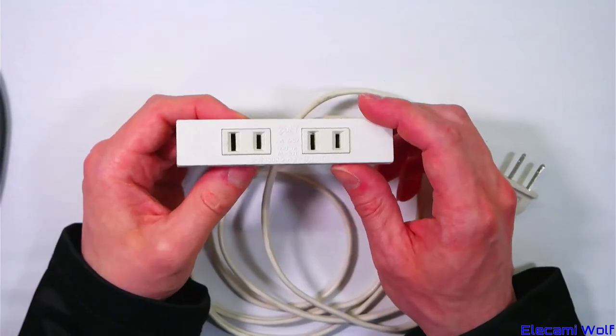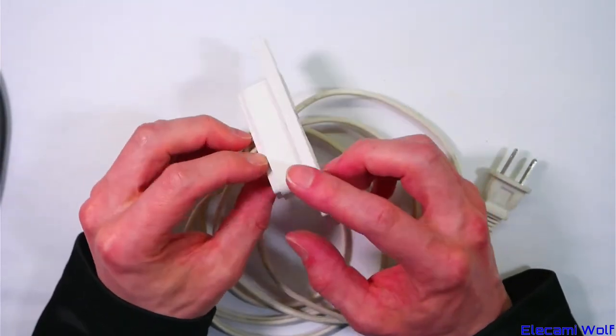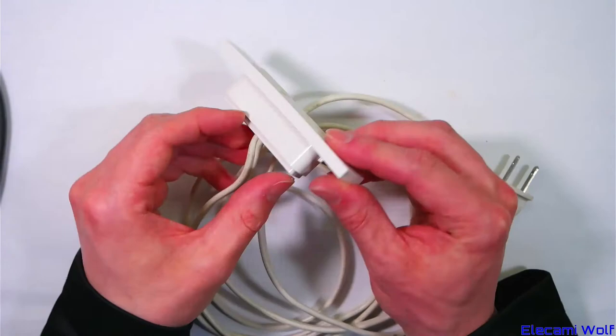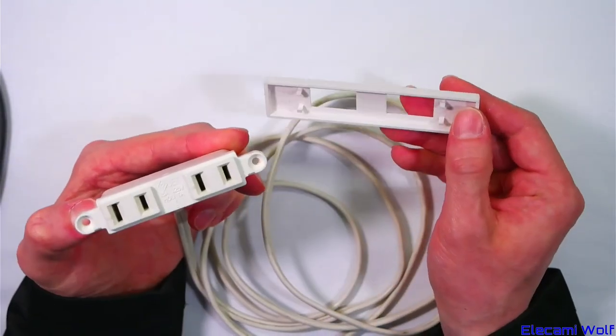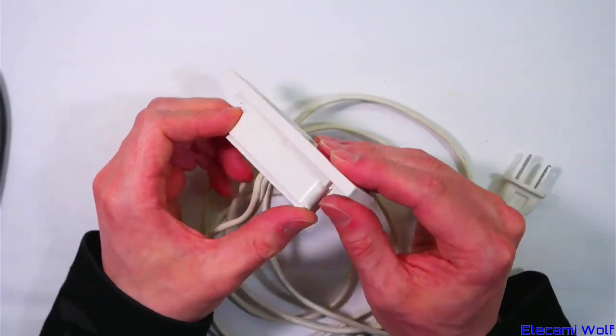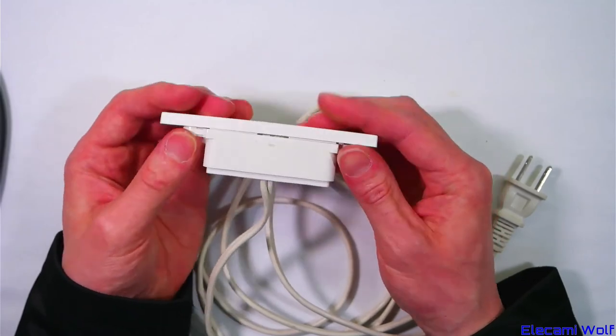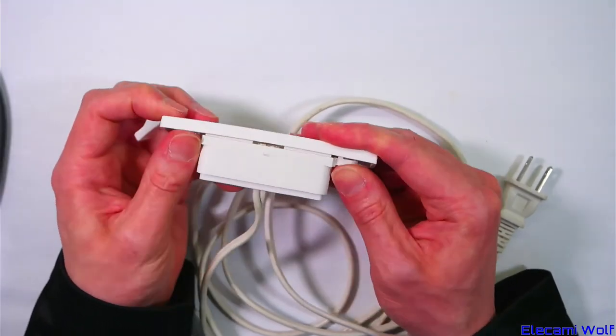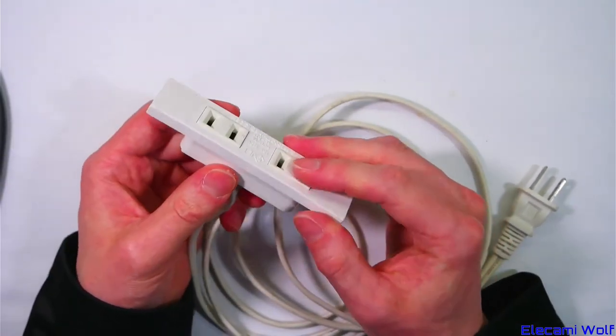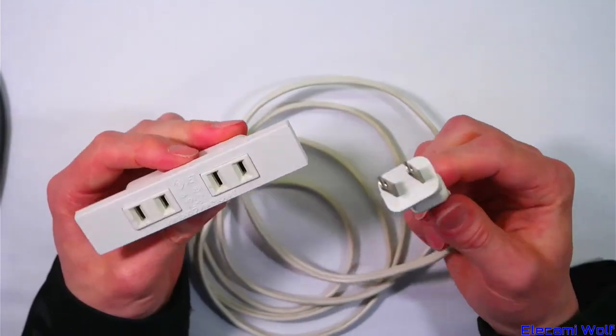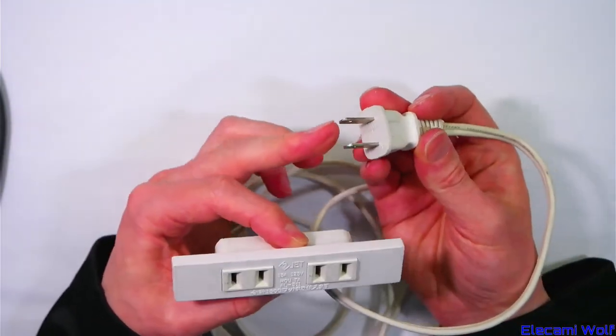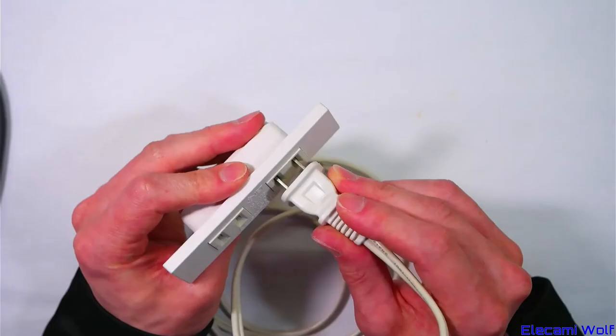This is the type of outlet that is built into desks and other furniture. Common in hotel rooms. The wire on this is relatively thick so it can be used at the full 15 amps that the standard outlets allow. Again this has non-polarized plug on it and polarized sockets.